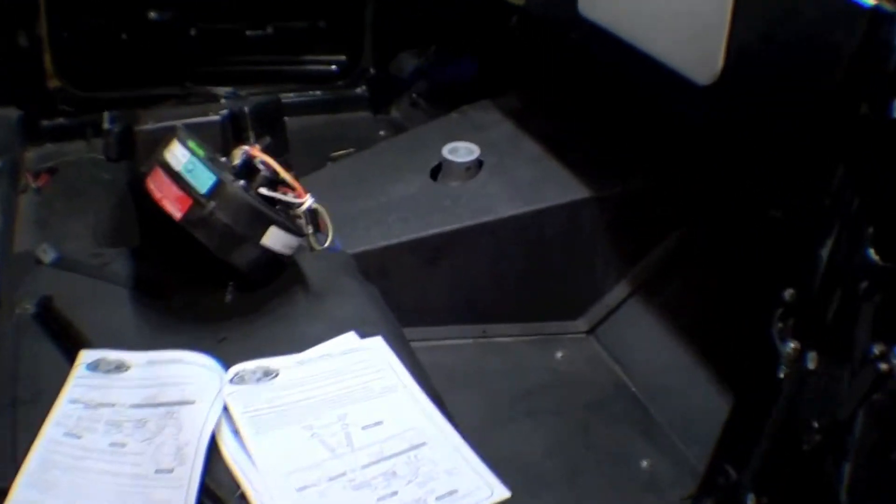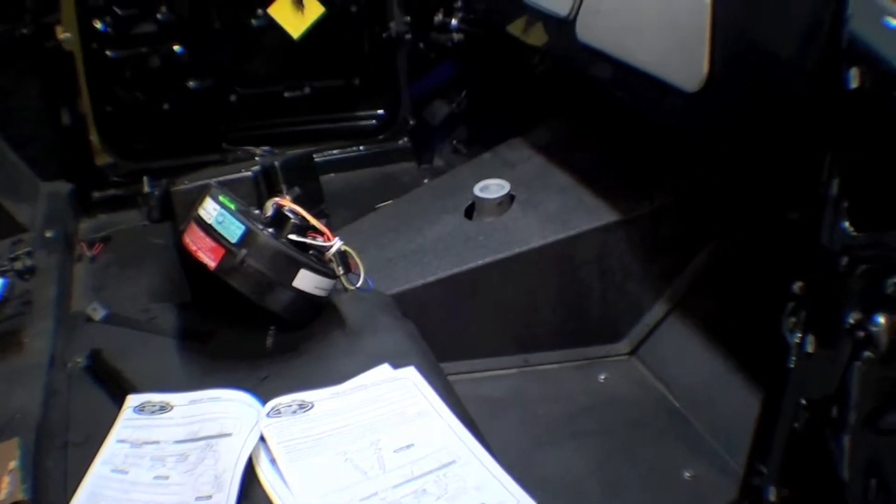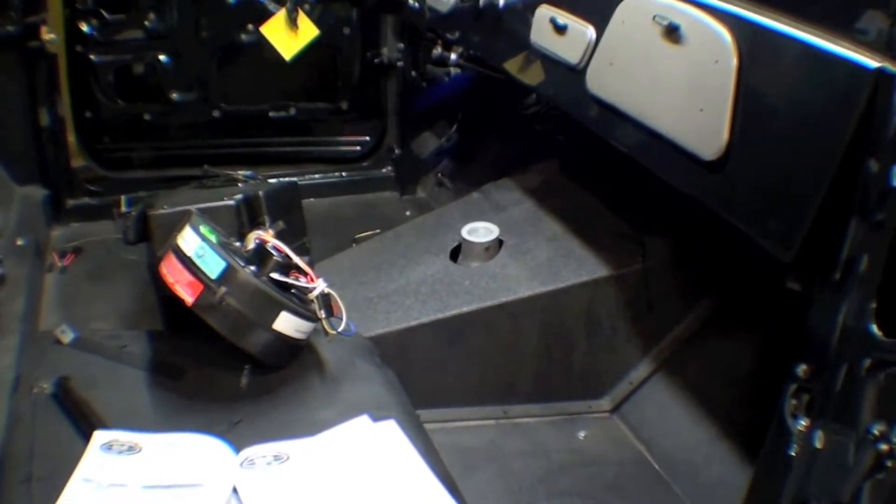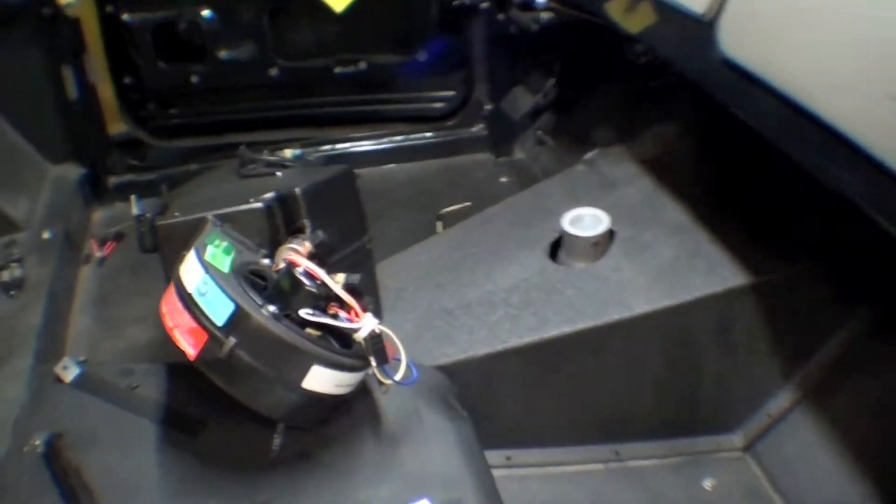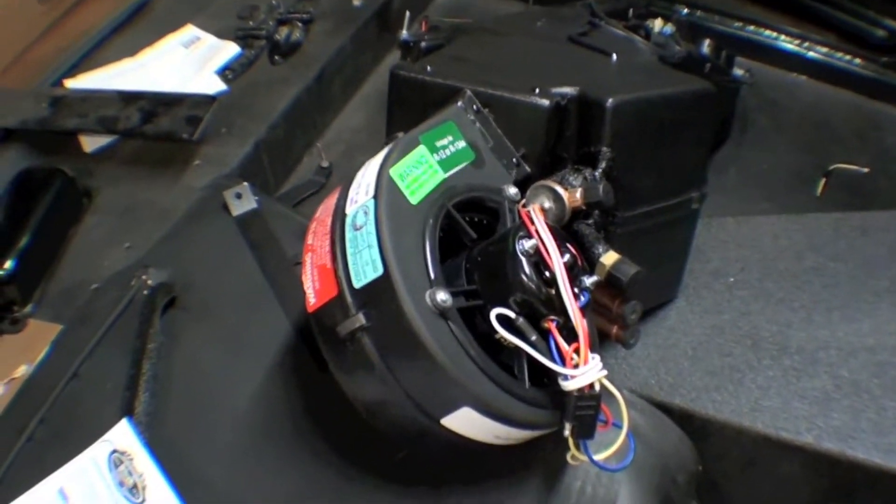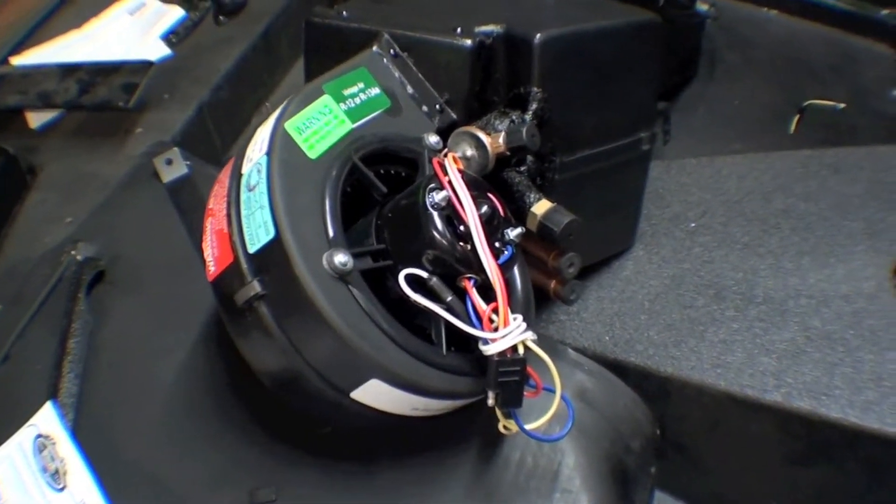The thing about this air system is it has great directions and we've put several in over the years. There's Vintage Air, there's Old Air - this is a Vintage Air unit. The air unit itself, the motor, is a big motor that pumps a lot of cubic feet per minute. It's a great motor.